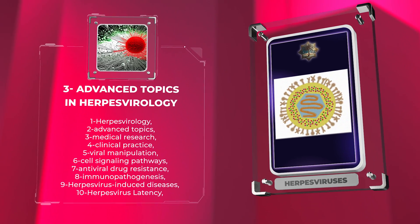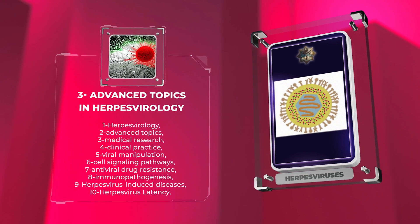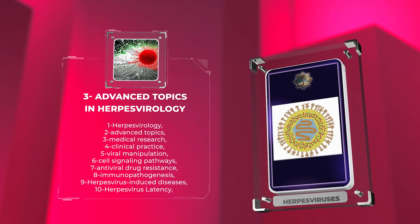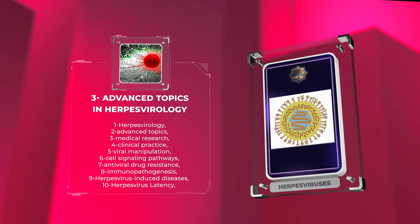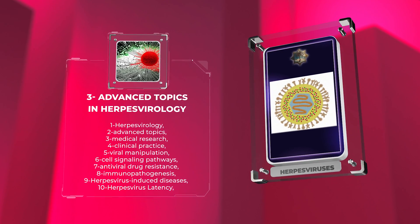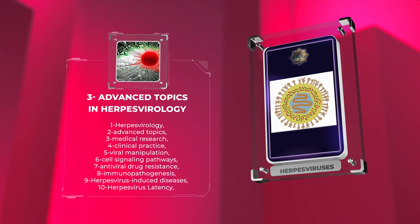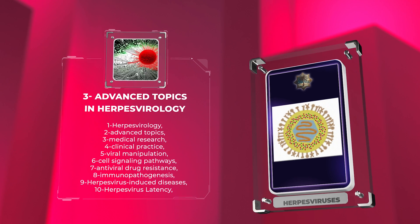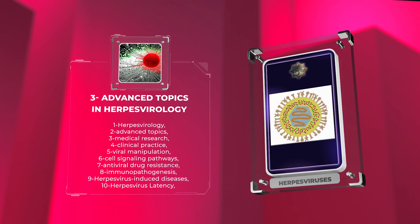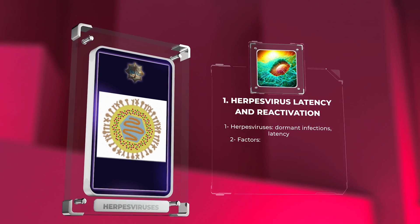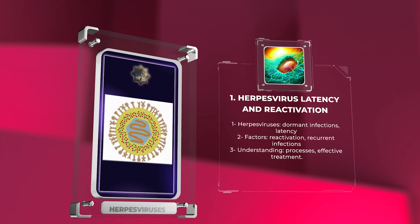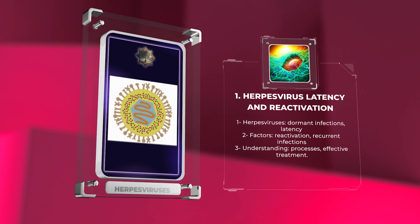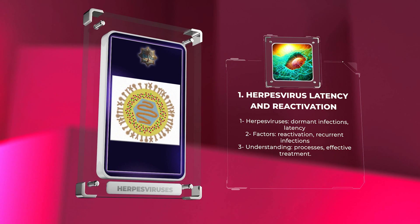As we unravel the intricate details of herpes virology, it is important to explore advanced topics that have significant implications for medical research and clinical practice. We will touch upon critical subjects such as viral manipulation of cell signaling pathways, mechanisms of antiviral drug resistance, and the immunopathogenesis of herpes virus-induced diseases. Our first advanced topic is herpes virus latency and reactivation — how herpes viruses establish dormant infections in hosts, and the factors that trigger reactivation leading to recurrent infections. Understanding these processes is essential for effective treatment.